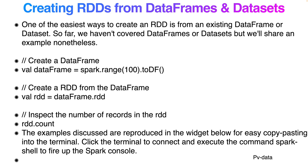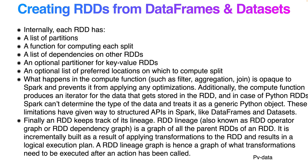To create an RDD from a DataFrame, use `spark.range(n)` to create a DataFrame, then call `dataFrame.rdd` to convert it to an RDD. There are two conversion methods: RDD to DataFrame and DataFrame to RDD. We'll learn both in coming lectures.